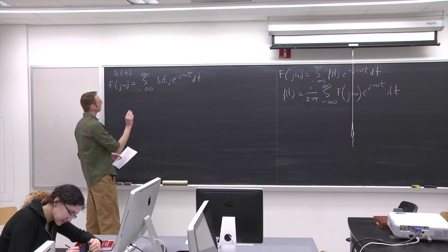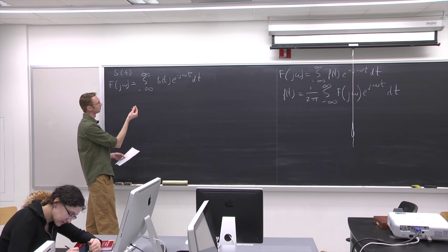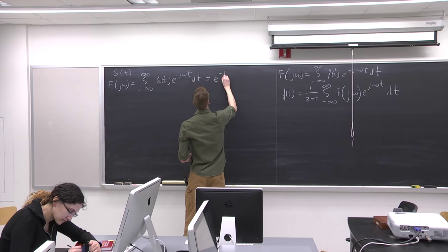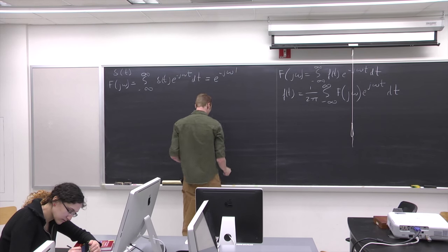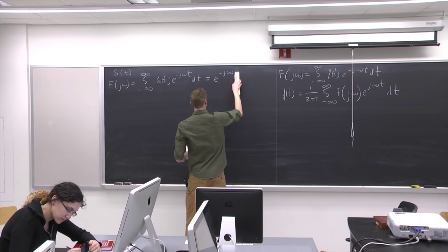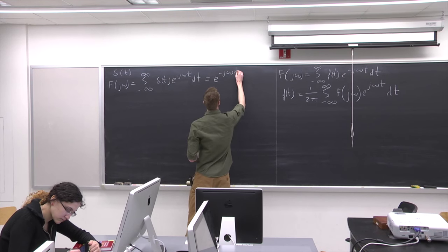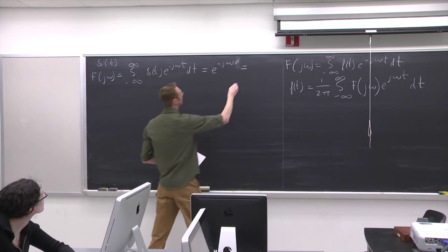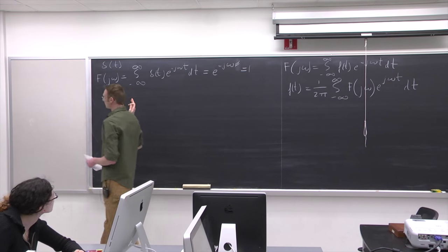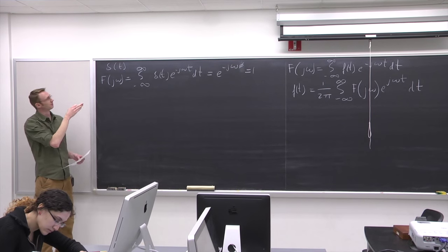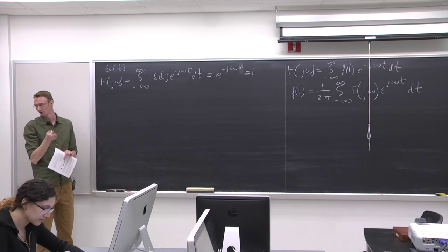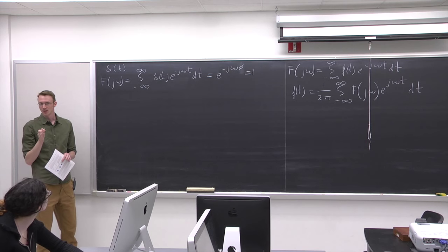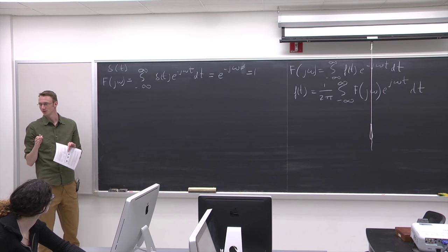The sifting property means we're simply going to have the value of what's in the integral evaluated at zero. The integration variable is t, so instead of t we substitute zero. The result comes out to one. So we're transforming the Dirac delta in the time domain to the frequency domain and we get a constant function.